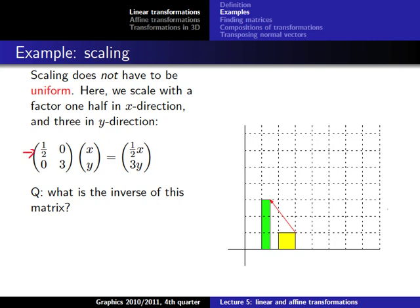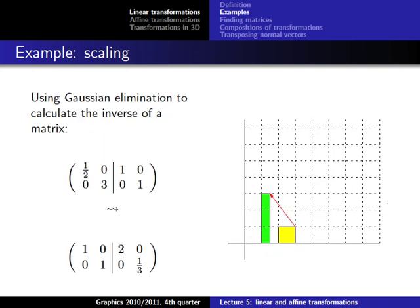We can also shrink an object by choosing a value smaller than one. For example, if the first factor is one-half, the x value is shrunk to half its size, and if the second factor is 3, the y value is tripled. Applied to all vectors defining an object, it gets half as far from the origin in x and increases by a factor of 3 in y.